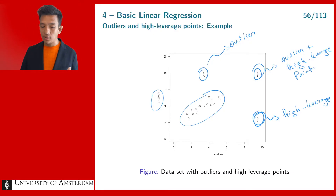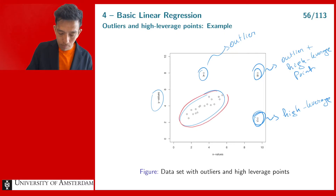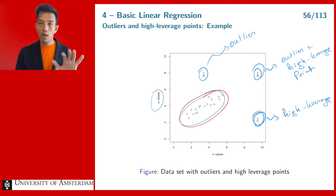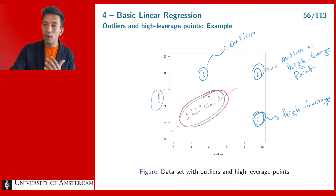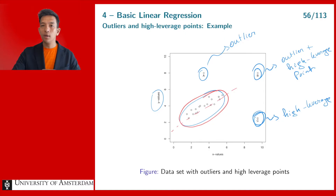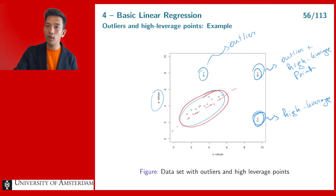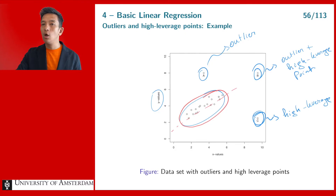Looking at the data set, we focus first on the red area — the majority of the data — which includes the base data plus three extreme observations. It seems that a linear model is a good fit for that part of the data. The question is: what is the impact of observations A, B, and C on the linear model? We are going to fit different linear models — first with only the regular red observations, then adding A, B, and C one at a time — to see what the effect is.